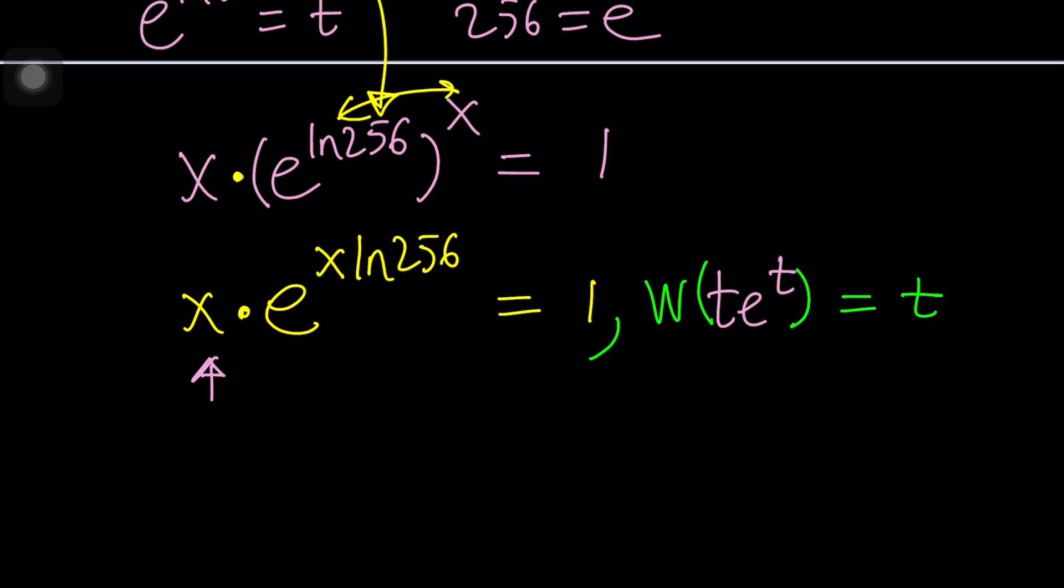So for that purpose, and by the way, Lambert's w function could be defined as the inverse of the function t e to the t. So if you call this f of t, then Lambert's w would be f inverse. Under certain conditions, of course, there are different branches, so on and so forth. So let's go ahead and use or get our t because we have e to the t. This is our t here.